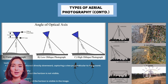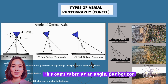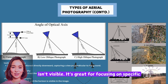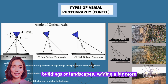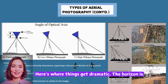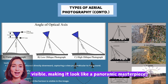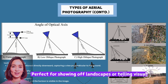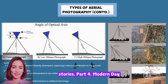Low oblique photography: this one's taken at an angle, but the horizon isn't visible. It's great for focusing on specific buildings or landscapes, adding a bit more perspective. High oblique photography: here's where things get dramatic. The horizon is visible, making it look like a panoramic masterpiece — perfect for showing off landscapes or telling visual stories.